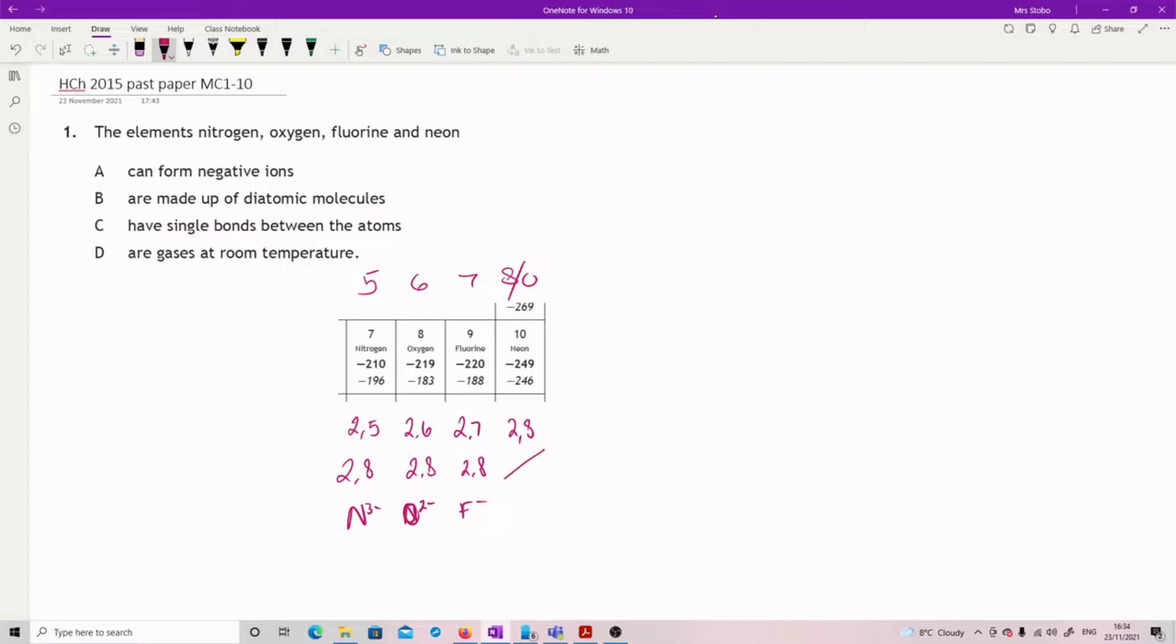Are made up of diatomic molecules? Same deal with neon. Nitrogen, yes, that's one of our diatomics. So is oxygen, so is fluorine. However, you remember it.